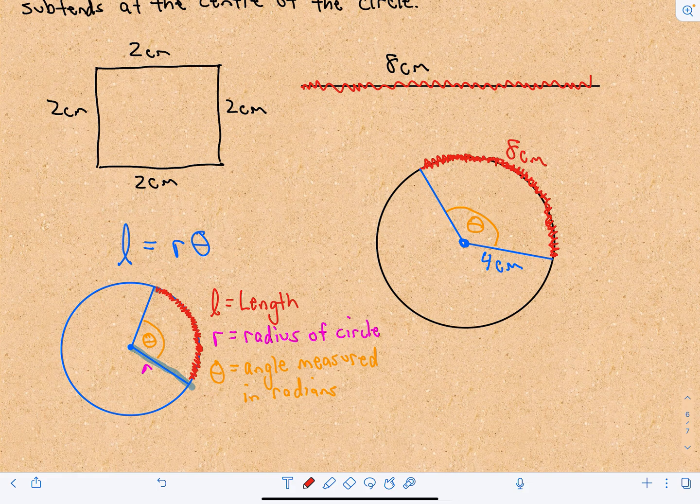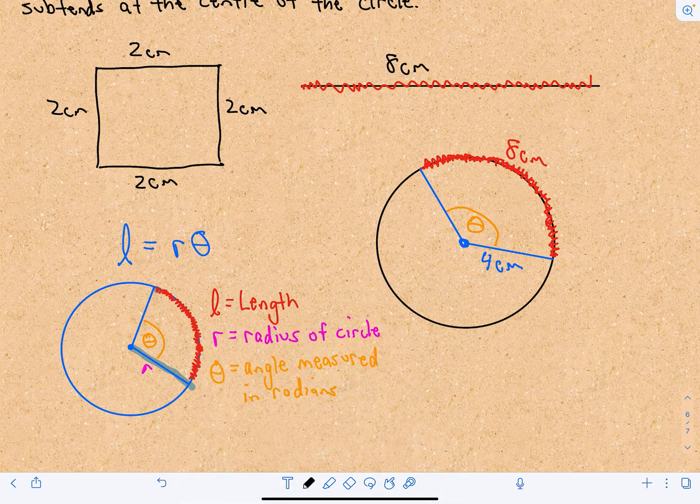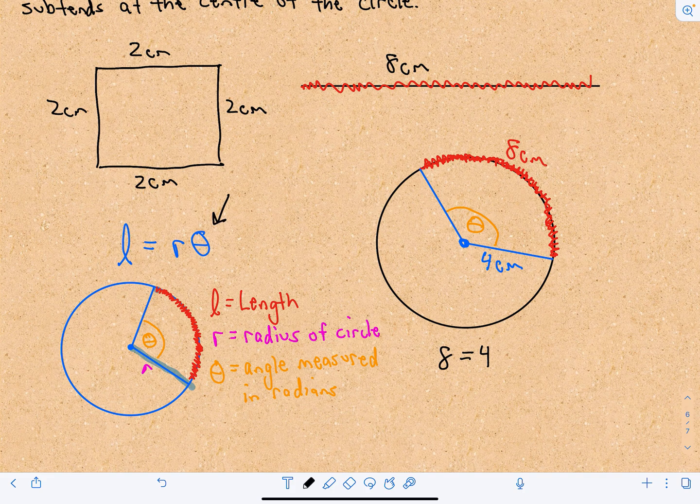So I'm going to fill that in. We know that the length is eight centimeters. We know that the radius is four centimeters. And then the thing that's missing is simply theta. So all we have to do is multiply by theta.